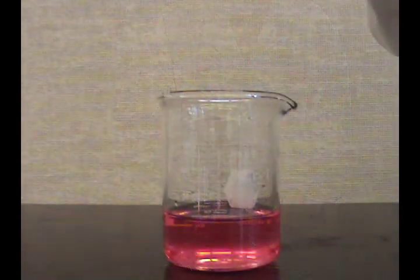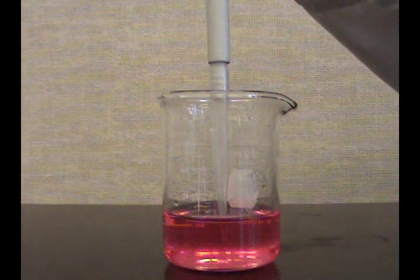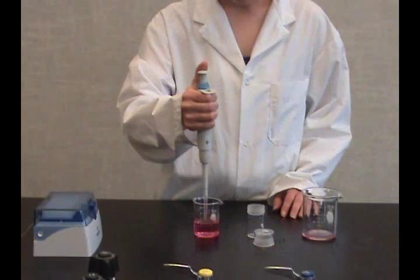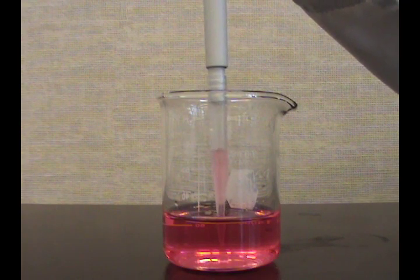Immerse the tip in sample, keeping the tip at a sufficient depth that no air will be drawn up into the tip. This can cause damage to the pipette if any liquid gets into the shaft. Draw the sample by slowly releasing the plunger. The calibrated volume will be drawn up into the tip.